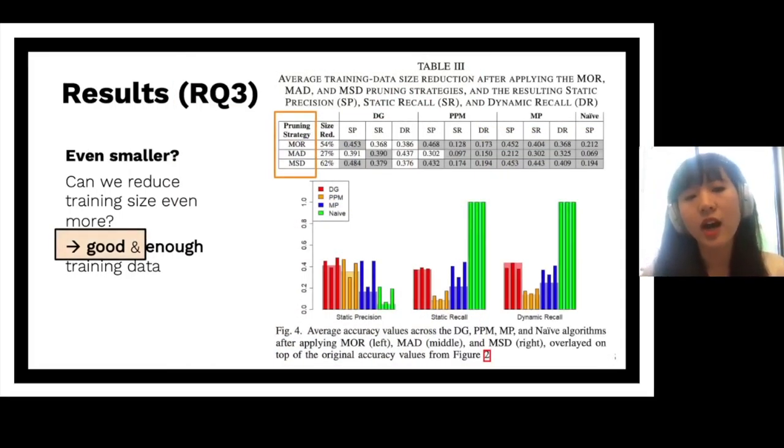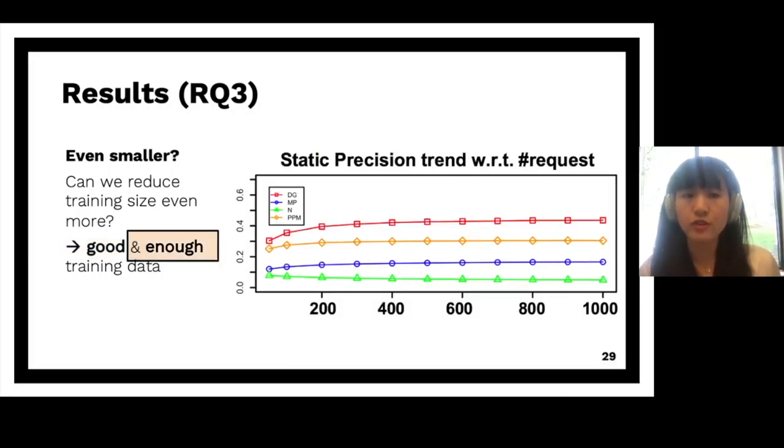For RQ3, in order to select the good training data, we developed three data pruning strategies. The results and discussions are all in the paper. We found that they are very promising, because they can significantly reduce the training data size, and they don't harm the accuracy that much. Today I'll focus more on how do we select enough training data.